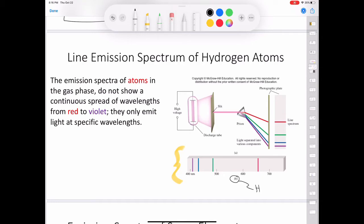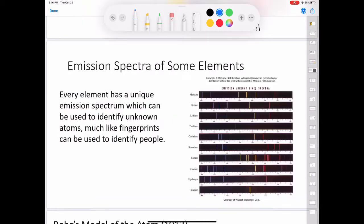This is the line emission spectrum of hydrogen atoms. Every element has a unique emission spectrum. The characteristic lines in atomic spectra can be used in chemical analysis to identify unknown atoms, much as fingerprints are used to identify people. When the lines of the emission spectrum of a known element exactly match the lines of the emission spectrum of an unknown sample, the identity of the sample is established.